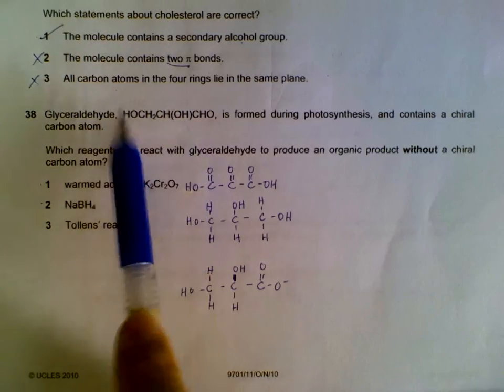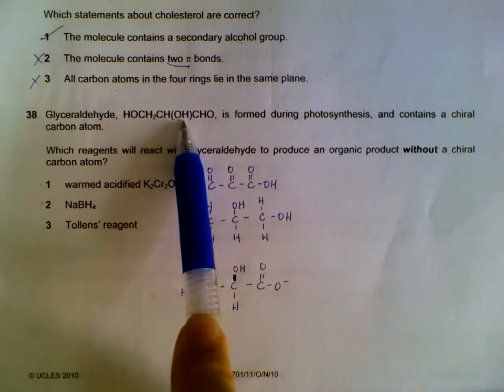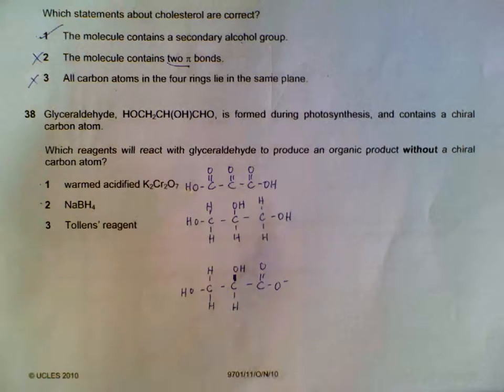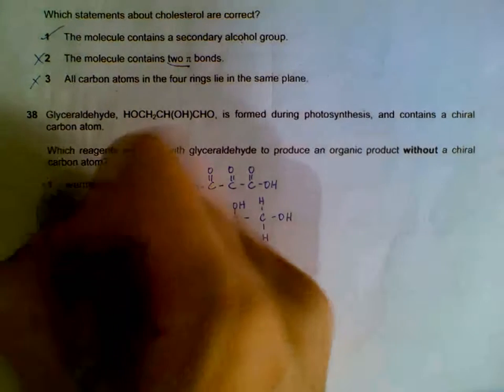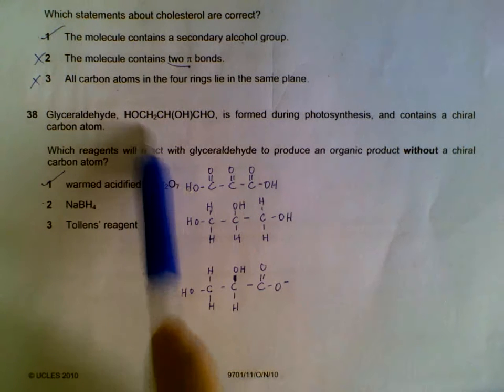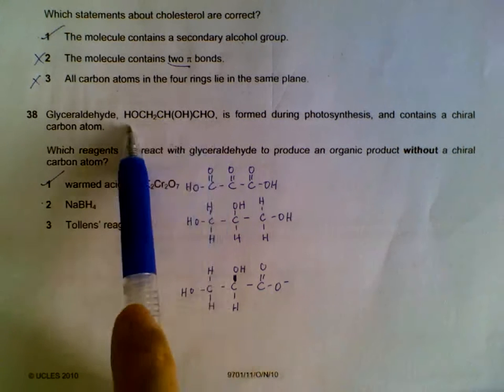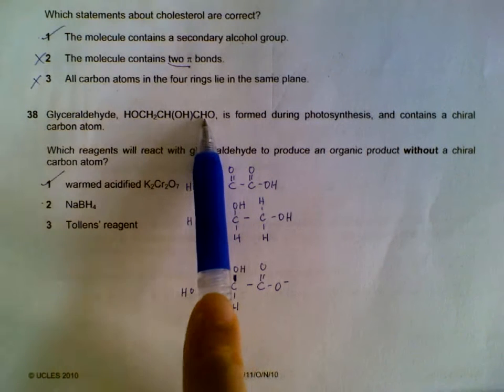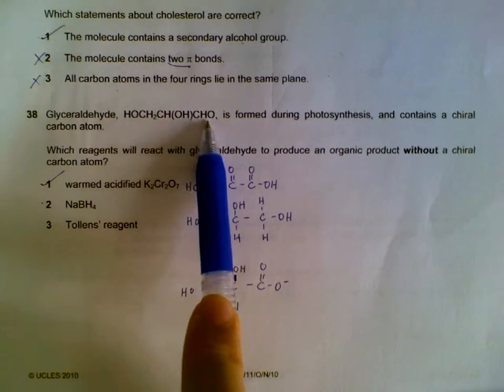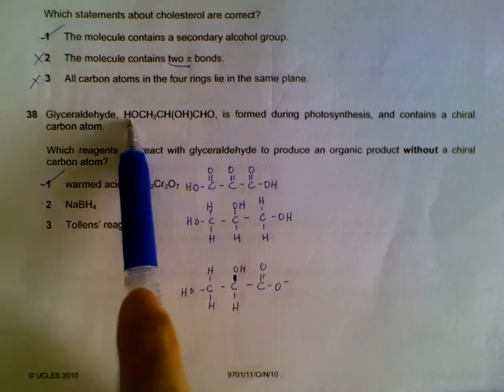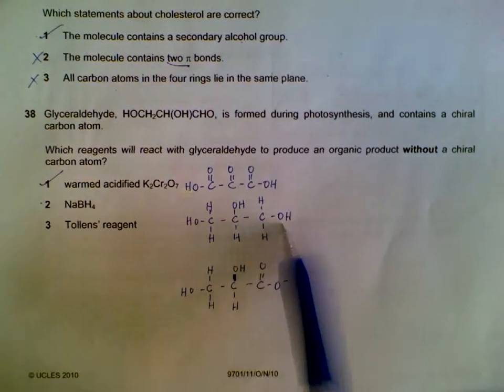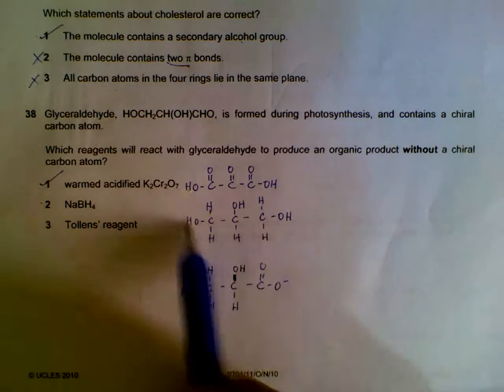Question 38. With warmed acidic Cr2O7^2-, the primary alcohol will become acidic groups, the secondary alcohol will become ketone groups. So you will form this molecule. There's no chiral carbon for this molecule. With sodium borohydride, that's a reducing agent. You will not change any of the alcohol. This is actually not an alcohol, this is actually aldehyde. So the aldehyde will become an alcohol. The secondary and primary alcohol will not be changed. So your aldehyde becomes your primary alcohol here, and there's no chiral carbon.